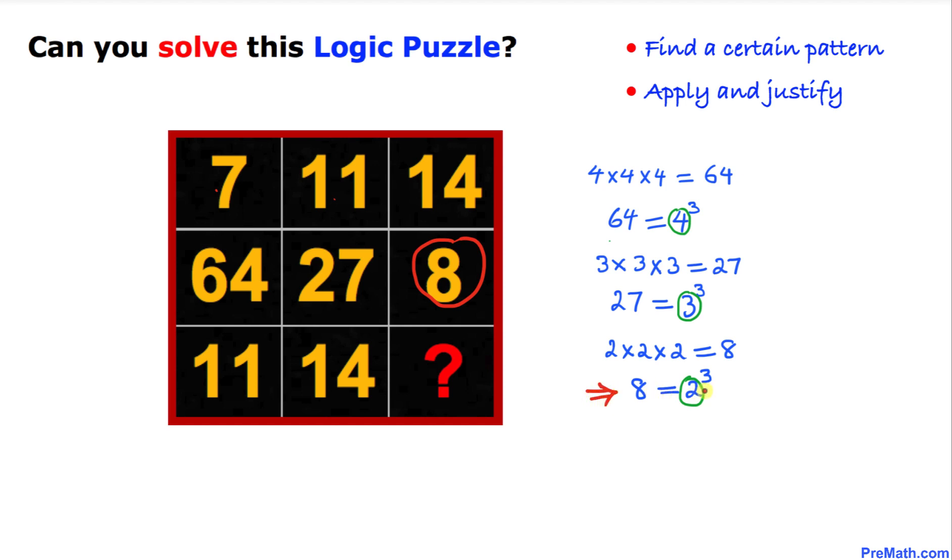So the cube root of 8 is going to be simply 2. Now we are going to add 14 plus this number 2. That is going to give us 16. So our answer to this puzzle is going to be 16.